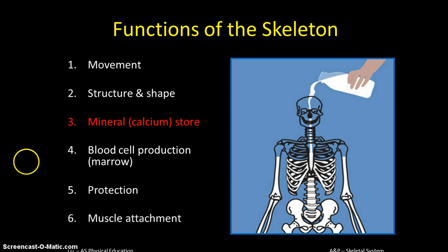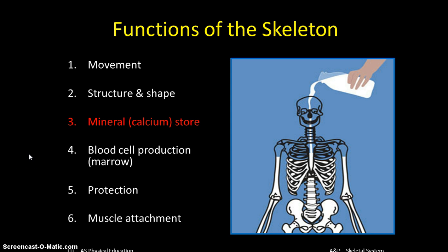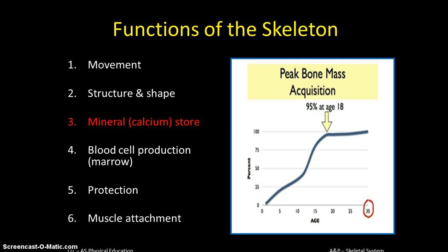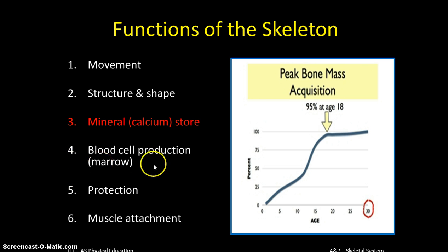Can you think of any diseases or conditions you can get later in life to do with bone strength? Osteoporosis. Absolutely. It's really important that when you're young you do lots of physical activity so that you can get what we call a high peak bone density or peak bone mass. That basically means your bones are really strong, because as you get older they get more fragile. So the stronger you can develop them when you're young, the better.